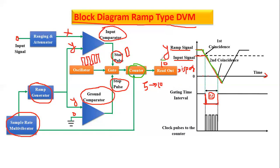The counter is reset because if it is not reset, then after counting 10 in the first measurement, the next measurement would continue from 10 instead of starting from zero. So after each measurement, the counter is reset to zero and starts fresh.